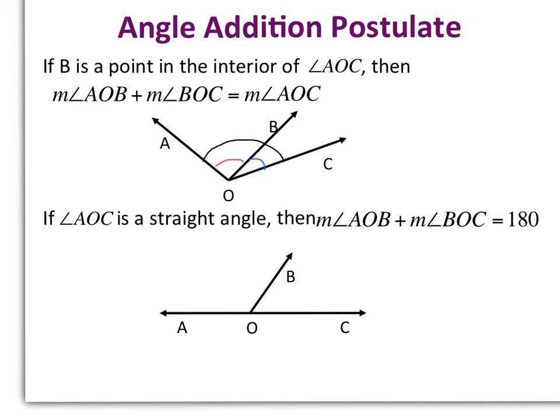And then the second one says if angle AOC is a straight angle, so 180 degrees, then the measure of angle AOB plus the measure of angle BOC equals 180.